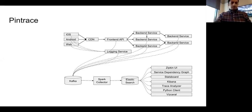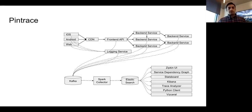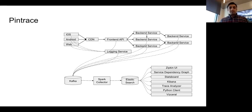This is how our tracing pipeline looks. We have instrumented most of our services, starting from clients like iOS, Android, and web, including CDN, the front-end API, and all back-end services. When a request passes through these services, they log trace data to our Kafka pipeline. From Kafka, a Spark collector pushes data to Elasticsearch, where we've built tools to view, search, and do deeper analysis on this data.